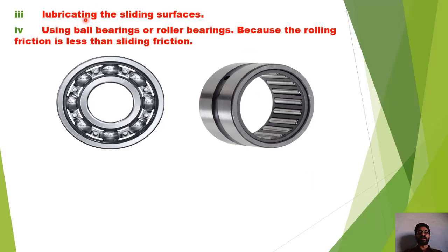تیسرا method ہے lubricating the sliding surfaces. اگر ہم دو sliding surfaces کے درمیان lubricant use کر لیتے ہیں جیسے oil یا grease ہے تو اس lubricating substance کو use کرنے کے نتیجے میں surfaces کے درمیان force of friction کافی حد تک کم ہو جاتی ہے۔ Machinery کے parts کو oil یا دوسرا lubricating substance لگانے سے ان کی working کافی smooth ہو جاتی ہے۔